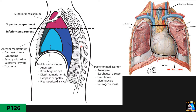Mediastinum is a space between two lungs and divided into superior, above the base of the heart, and inferior. The inferior is divided into three parts: anterior, front of the heart; middle, which corresponds exactly to the heart; and posterior mediastinum, beyond the heart.